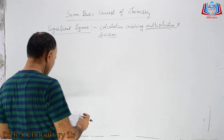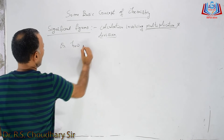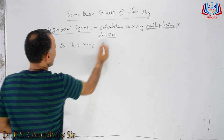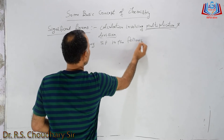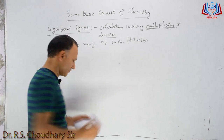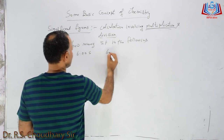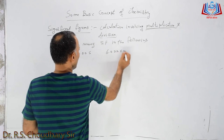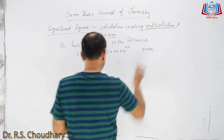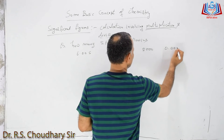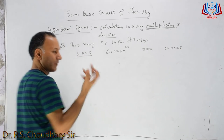Now I am taking some examples. Question 1: How many significant figures are in the following? First: 6.005. Second: 6.02 × 10²³. Third: 8000. Fourth: 0.0025.